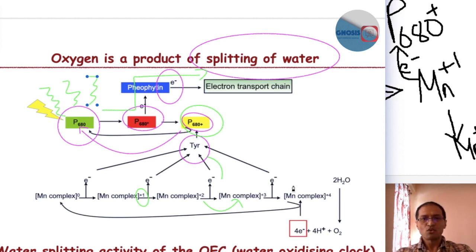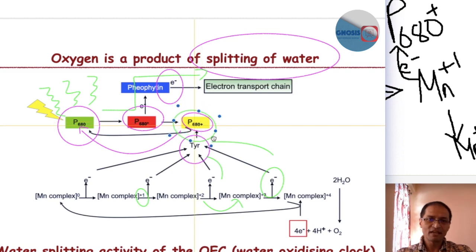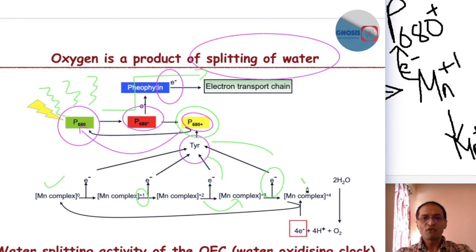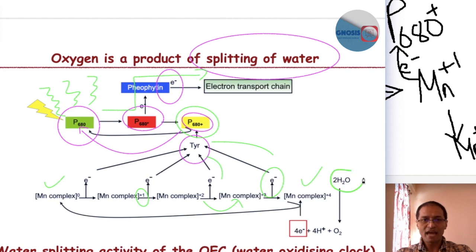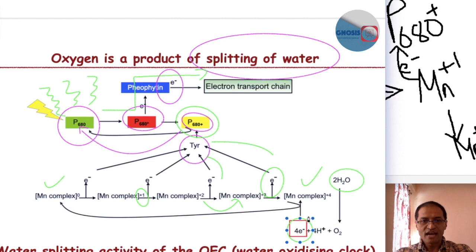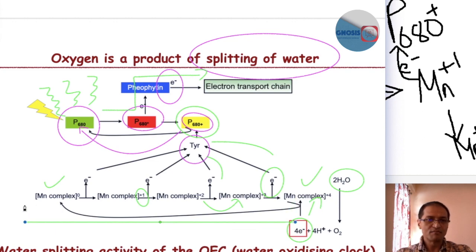This continues for a fourth time. When another electron from Mn(+3) is given to P680+ through tyrosine, manganese is converted from Mn(0) through to the Mn(+4) oxidation state — going through Mn(0) → Mn(+1) → Mn(+2) → Mn(+3) → Mn(+4). When manganese reaches the +4 oxidation state, the water molecule is split and oxidized. The electrons generated from water are taken up by manganese, which reverts back to Mn(0).